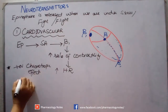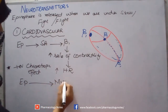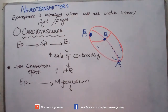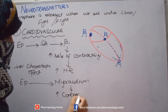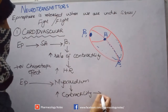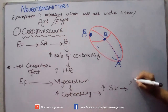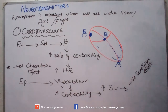As epinephrine acts on the myocardium via beta-1 receptors, it causes increased contraction and increased stroke volume. This increased contractility — not just rate but force of contraction — leads to increased stroke volume, producing a positive inotropic effect. So on the heart, epinephrine produces both a positive chronotropic effect and a positive inotropic effect.